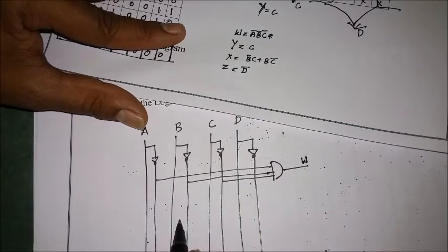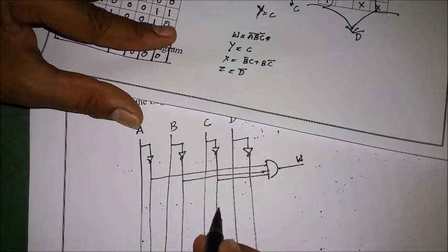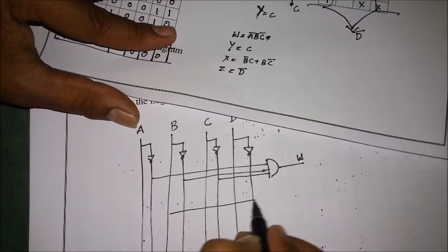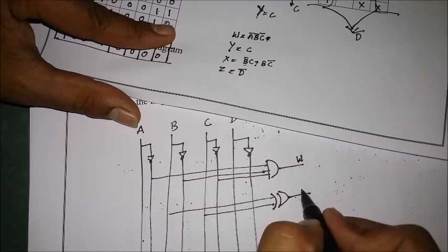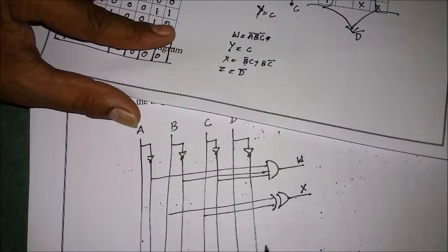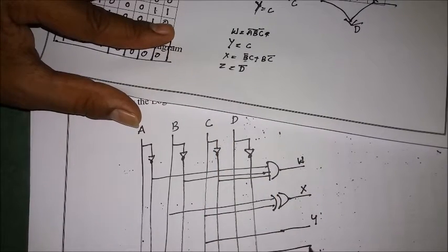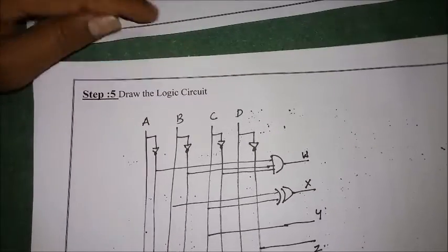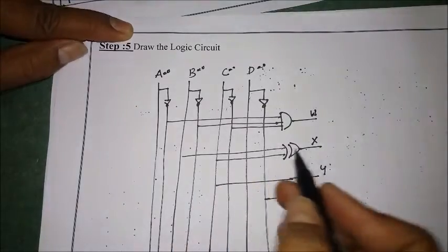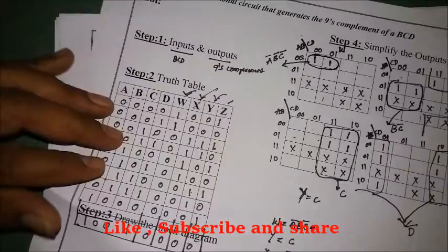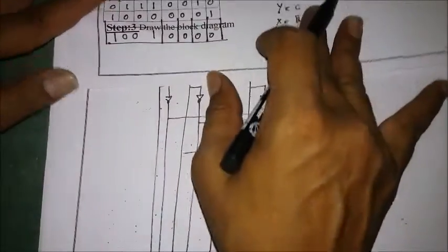For X, which is B̅C + BC̅, I can simply give B and C into an XOR gate, so I represent X with an XOR gate. For Y, it is directly connected to the C line. For Z = D̅, I simply pass D through an inverter (NOT gate). So in this circuit, when input A=0, B=0, C=0, D=0, I need to get the output W=1, X=0, Y=0, Z=1, which matches the truth table.